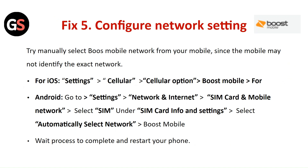Fix Five: Configure network settings. Try manually selecting the Boost Mobile network from your mobile, since the device may not identify the exact network automatically. For iOS, go to Settings, then Cellular, then Cellular option, and click on Boost Mobile. For Android, go to Settings, then Network and Internet, then SIM Card and Mobile Network. Select the SIM under SIM card information in Settings and select the automatically selected network. Click on Boost Mobile, wait for the process to complete, and restart your phone.